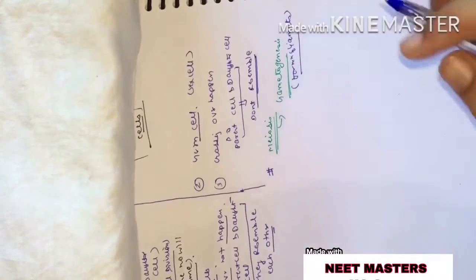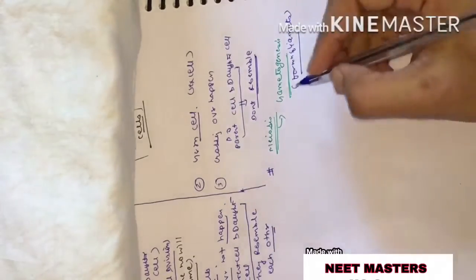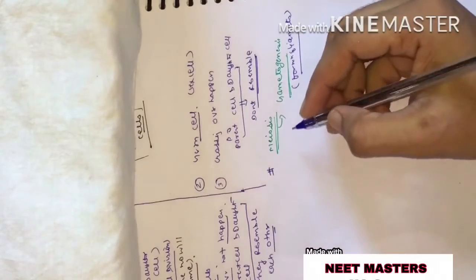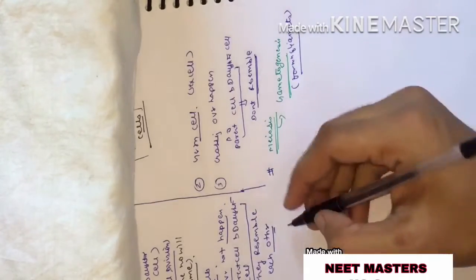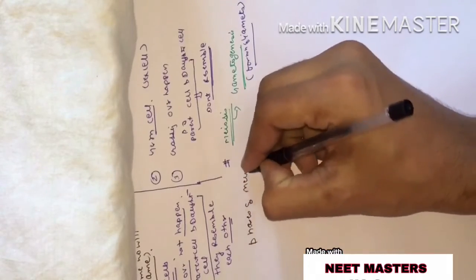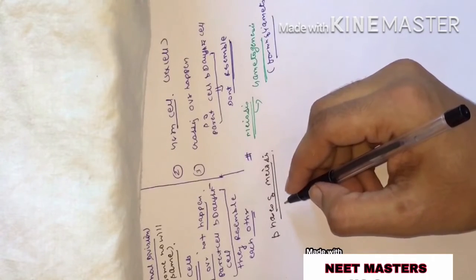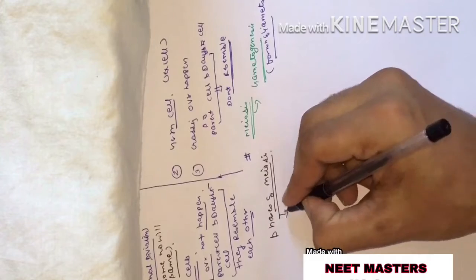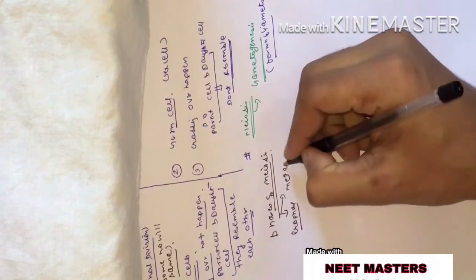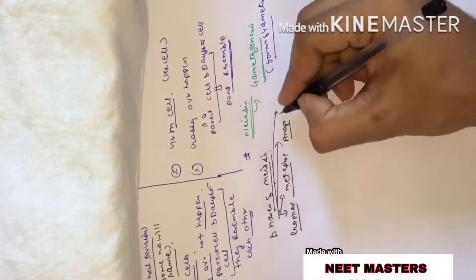Now, regarding the formation and phases of meiosis — the next heading is phases of meiosis. We will try to define the phases. The first is prophase, the second is metaphase, the third is anaphase, and the fourth is telophase.